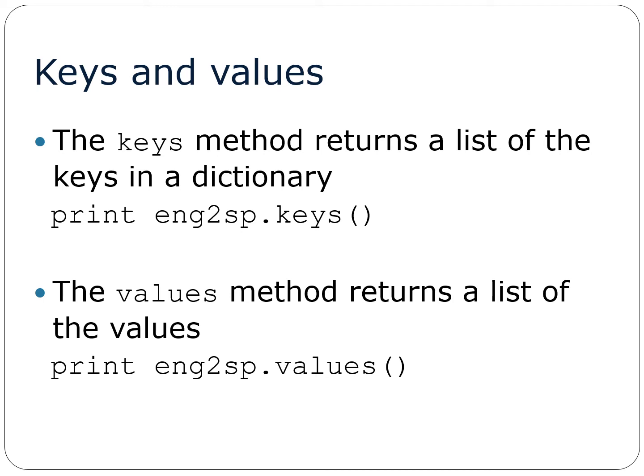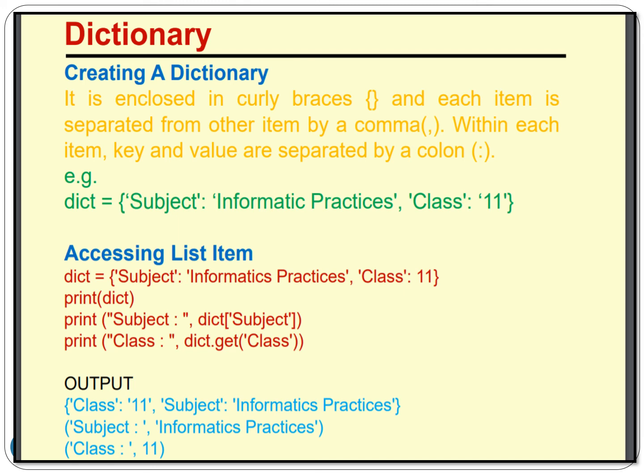There are two methods — keys() and values() — which we use to separately print the keys or values. Normally if we print a dictionary it prints both keys and values. But if we want to print only the keys, we use: print(dictionary_name.keys()). It will print all the keys. And if we want to print only the values, we use: print(dictionary_name.values()). It will print only the values.